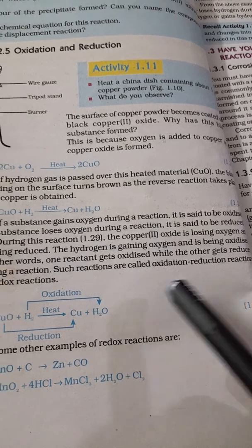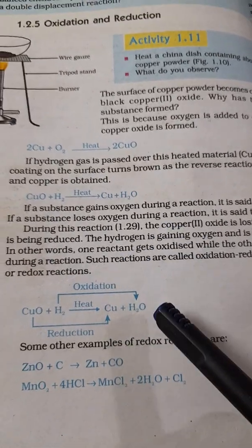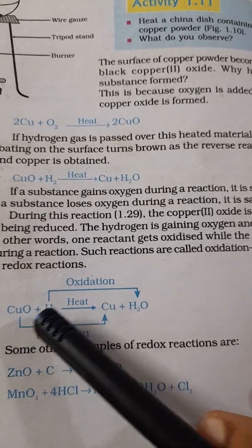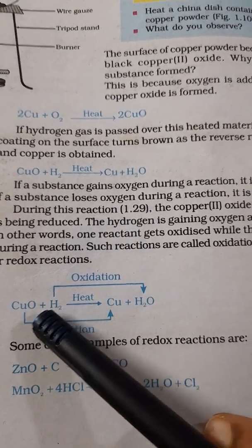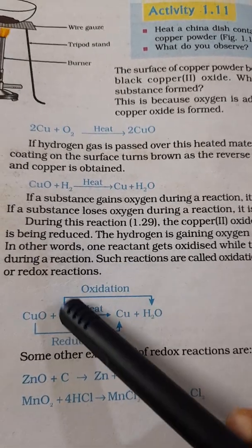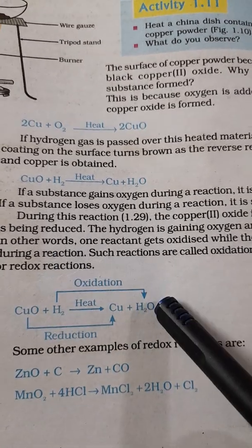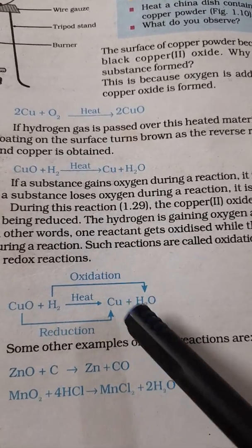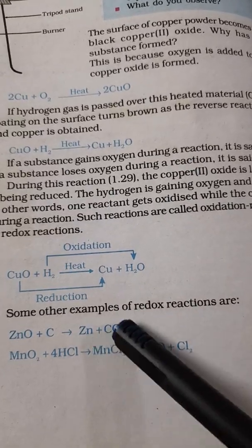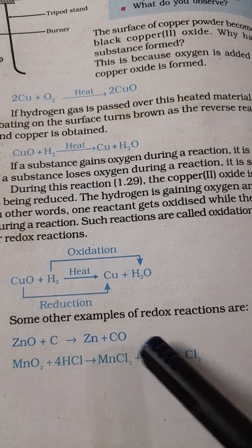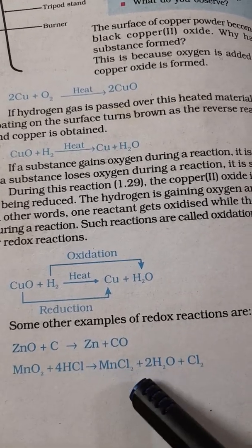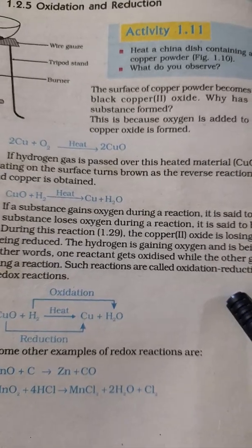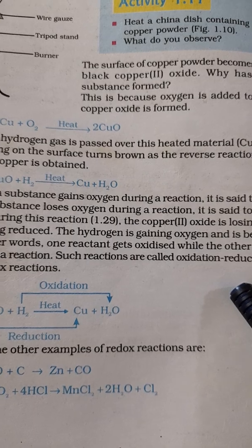The hydrogen is gaining oxygen and that is getting oxidized. The one element which gains oxygen is oxidized, and in other words one reactant will get oxidized but the other gets reduced during a reaction. Such reactions are called oxidation reduction reaction or we call it by another name: redox reaction. Again same equation, you can represent both oxidation and reduction. Here CuO plus H2 gives Cu plus H2O. H2 becoming H2O because H2 accepts one oxygen atom, so it forms H2O, that is oxidation, adding of oxygen. Here CuO loses oxygen and becomes copper, that is reduction. We have some other examples for redox reaction: ZnO plus C gives Zn plus CO, MnO2 plus HCl gives MnCl2 plus H2O plus Cl2. These are all simple reactions and with these equations you can easily understand what is meant by oxidation reduction and redox reaction.